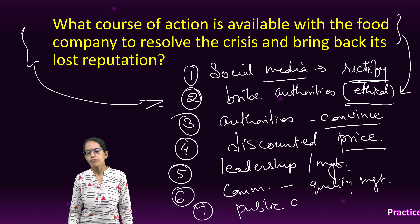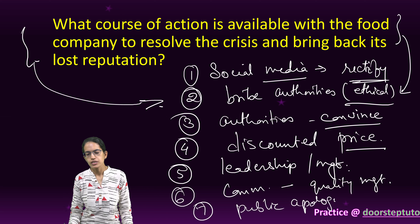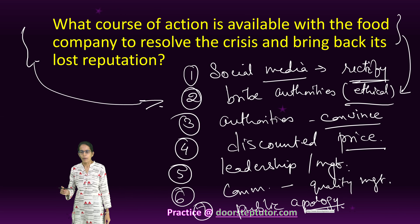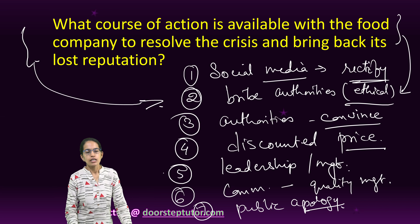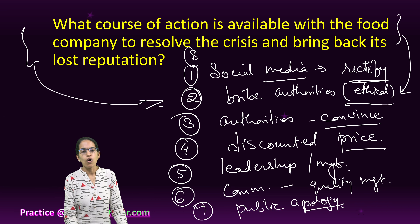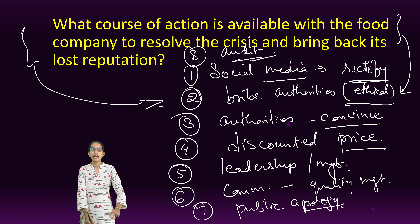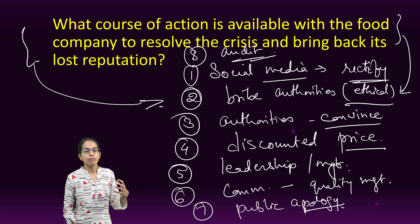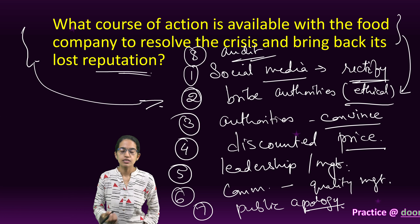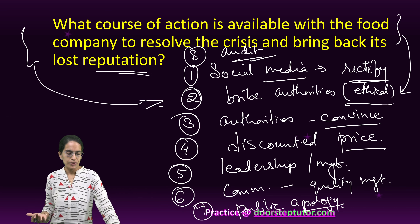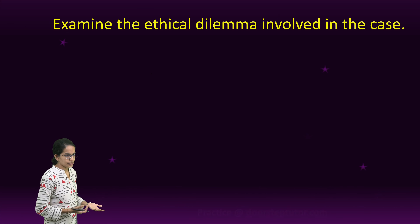Quality management should be taken into account, and a public apology can be considered — through newspapers, social media, or news channels. The company can also ask for audits to review its financial statements and be ready to pay the fine, while ensuring its reputation is maintained. Those are some of the actions the company can take.